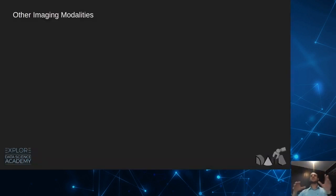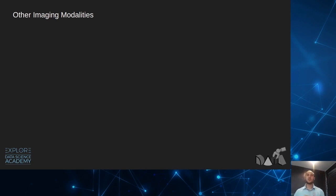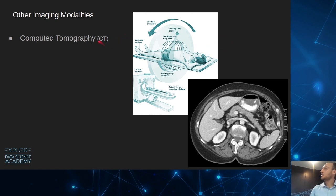That radiograph is what we typically call an X-ray. Who here has had an X-ray before? X-rays are the most common imaging modality — about two-thirds of all medical imaging procedures are X-rays or chest X-rays. But there are other imaging types now. An extension of the X-ray is CT, or computed tomography. Instead of having the X-ray source fixed, it spins around you very rapidly.